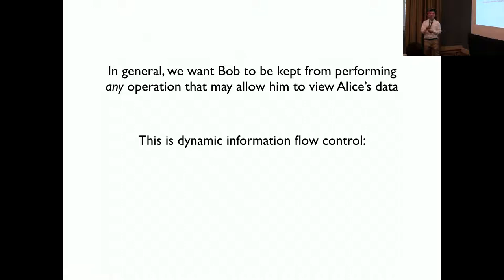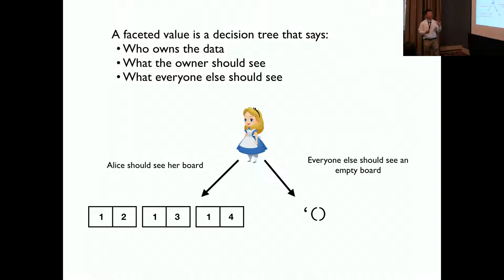In general, we don't want Bob and any other person except Alice herself to perform any operation that may allow them to see and modify Alice's data. This is what dynamic information control is about, and this is what faceted execution does.